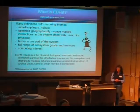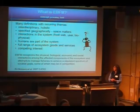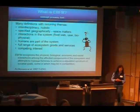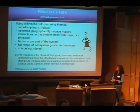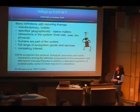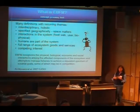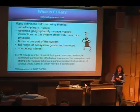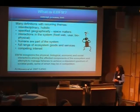You'll be hearing many definitions of EBFM today. The one I like is by Murawski et al., which recognizes that there are many definitions with recurring themes: EBFM is interdisciplinary, holistic, and specified geographically — that's what it has in common with MPAs, because they're also specified geographically, so space matters. It considers trophic interactions, interactions of users beyond just fishermen, and biophysical interactions. It advances the concept beyond single-species management. Humans are an explicit part of the system, and it looks at the full range of ecosystem goods and services, evaluating competing interests.